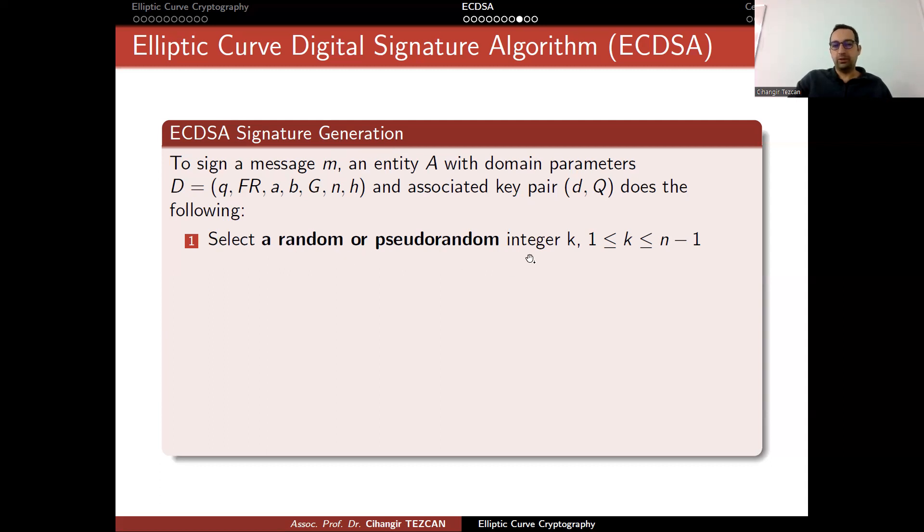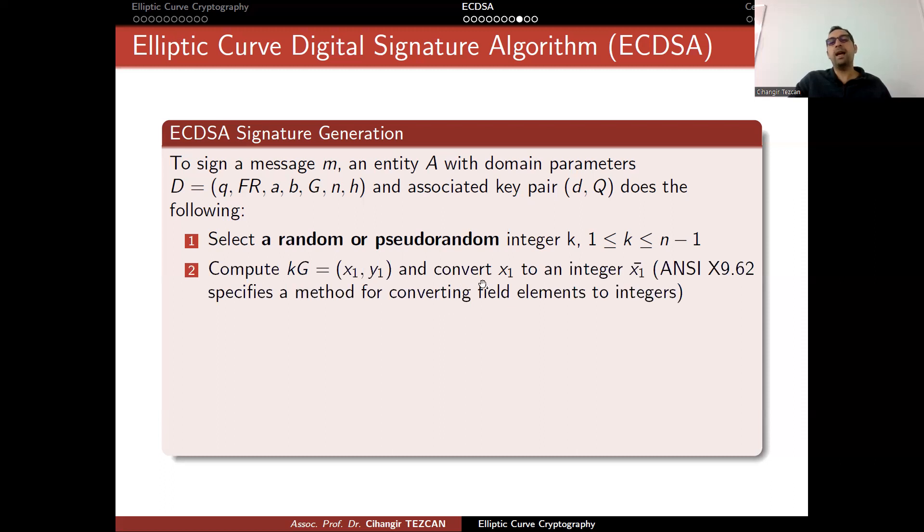You randomly generate a number integer k, then compute k times g. You are adding the base point g to itself k many times and convert the coordinate x1 to an integer. Recall that this x1 is a field element. You turn it into integer. These conversions are explained in the ANSI standards. Then, you compute this integer modulo n to obtain r. If r equals to zero, then this doesn't work. You go back and choose another k.